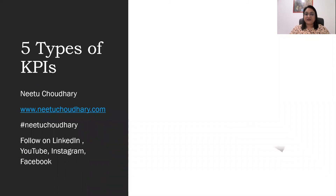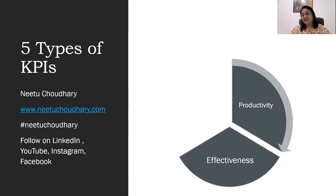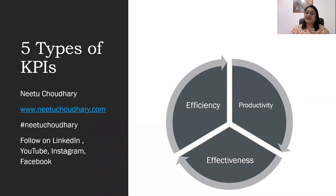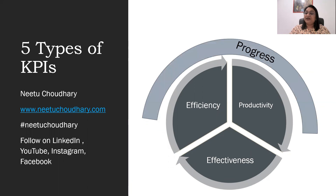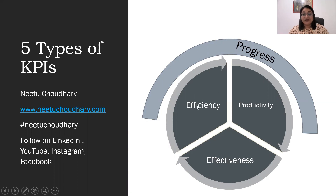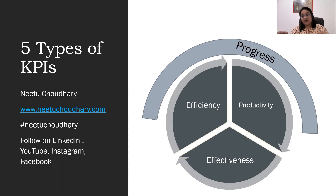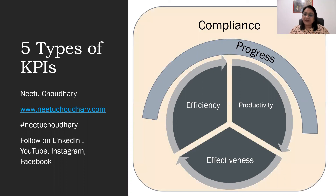We have seen five KPIs: Productivity KPI, Efficiency KPI, Effectiveness KPI, Compliance KPI, and Progress KPI. Progress KPI is mostly from the organization's perspective — the degree of completion of something. Efficiency KPI is from the customer's perspective — how efficient we are in providing something. Effectiveness KPI measures the goodness of the service and whether it fulfills its purpose. Compliance KPI measures the degree of adherence to regulation.